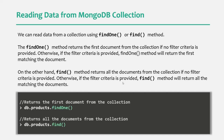In this example, you can see we are calling the findOne method on the products collection without passing any filter object. In that case, it is going to return the very first document from the products collection. But when we use the find method on the products collection without passing any filter object, it is going to fetch all the documents from the products collection.